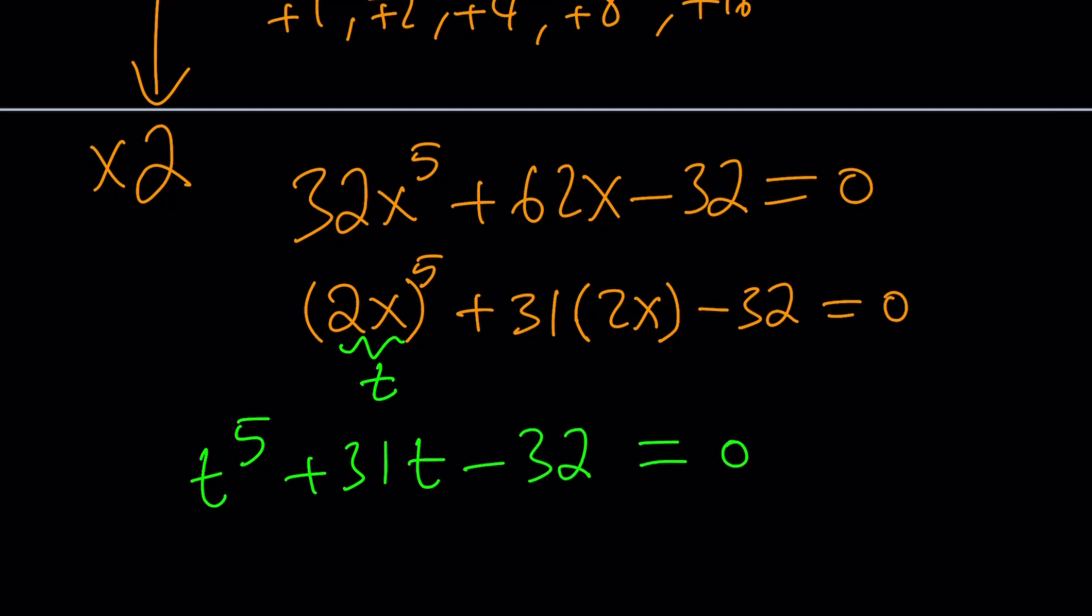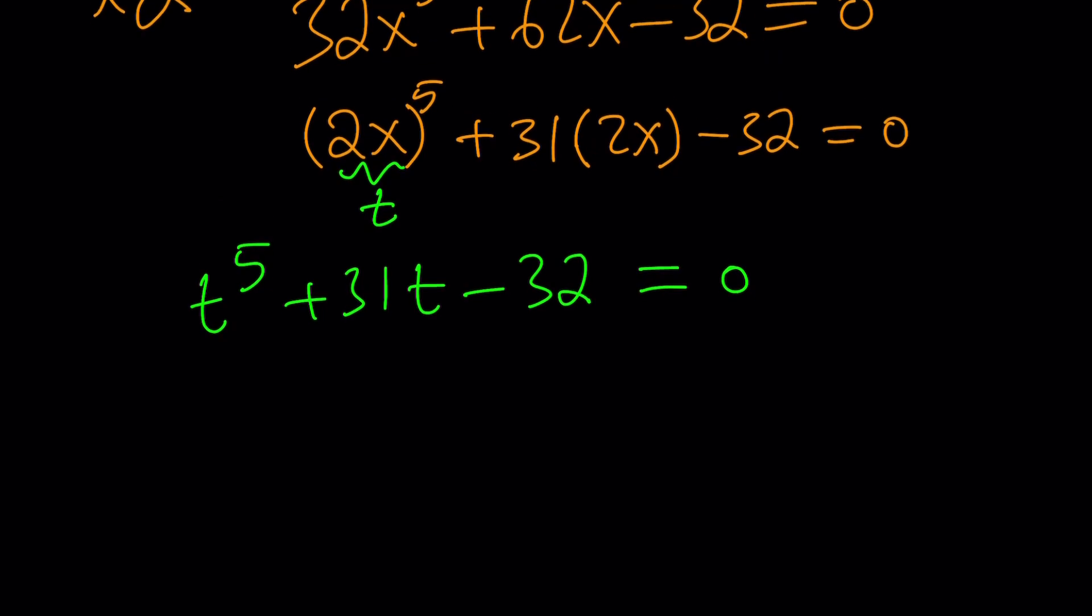And yes, hopefully you remember what I talked about before several times. The first thing you check in a polynomial equation, no matter what the degree is, the sum of the coefficients. If the sum of the coefficients is 0, which is 1 plus 31 minus 32, then this means what?